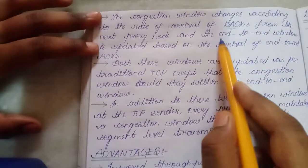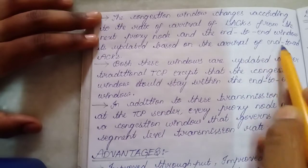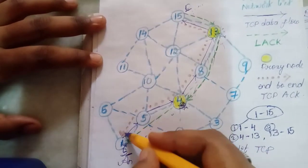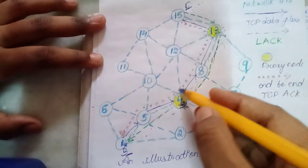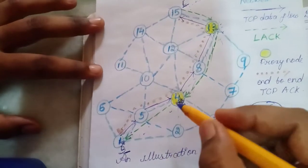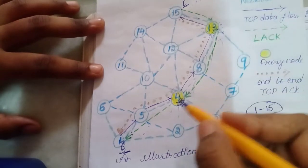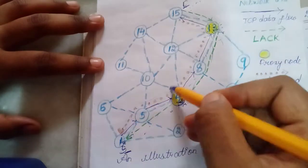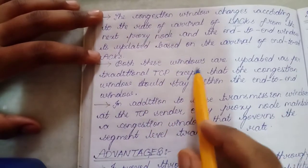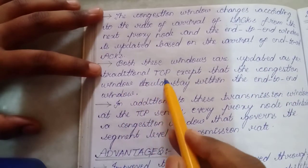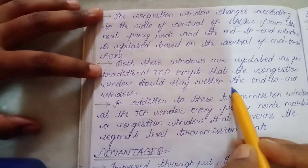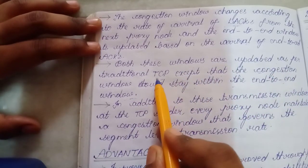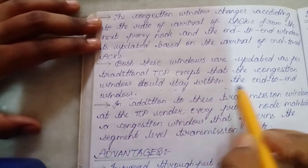The end-to-end window is updated based on the arrival of end-to-end acknowledgements between the destination and the source node. The brown dotted line represents end-to-end acknowledgement packets. The congestion window changes depend on the local acknowledgement packet transmission rate, whereas the end-to-end window depends on the end-to-end packet transmission rate. Both windows are updated as per traditional TCP, except that the congestion window must stay within the end-to-end window.